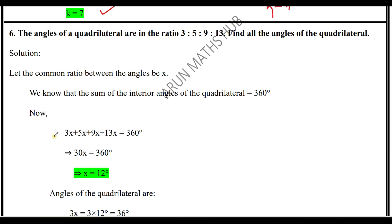Sixth question: the angles of a quadrilateral are in the ratio 3:5:9:13. Find all the angles of the quadrilateral. Let the common ratio between the angles be x, so the angles are 3x, 5x, 9x, and 13x. The sum of all angles in a quadrilateral is 360 degrees, so 3x + 5x + 9x + 13x = 360.